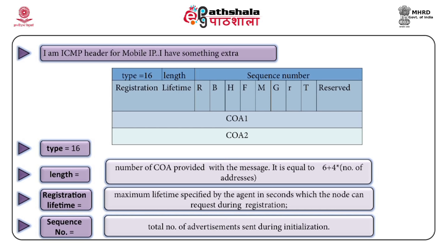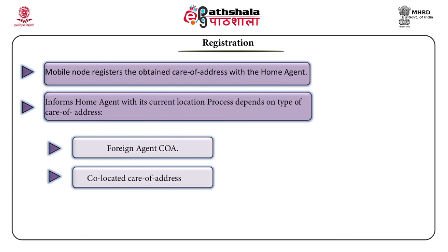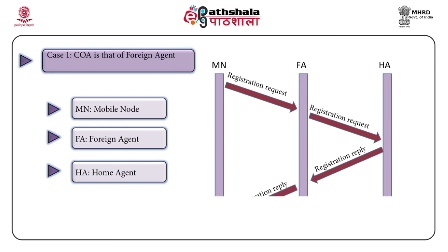Once the mobile node has acquired a care of address using either method, it needs to register that care of address with its home agent. The registration process depends on whether the care of address is a foreign agent care of address or a co-located care of address. In case 1, when using a foreign agent care of address, the mobile node sends a registration request to the foreign agent, which forwards it to the home agent. The home agent accepts or rejects the request and replies to the foreign agent, which then relays the reply to the mobile node.